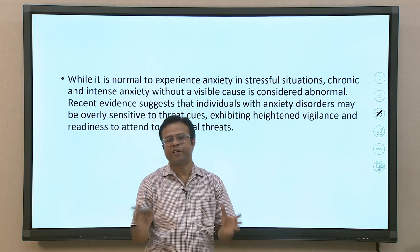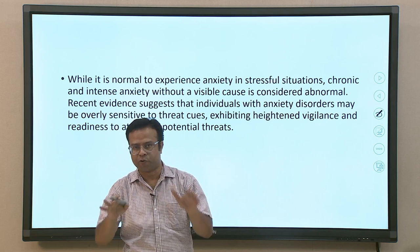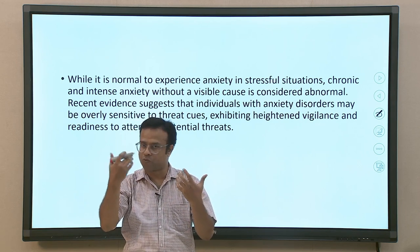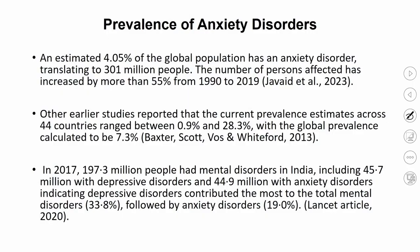Regarding prevalence, about 4% of the global population has an anxiety disorder, translating to approximately 301 million people worldwide. The number of persons affected has increased by more than 55% from 1990 to 2019, indicating the prevalence rate is increasing quite dramatically with the passage of time.